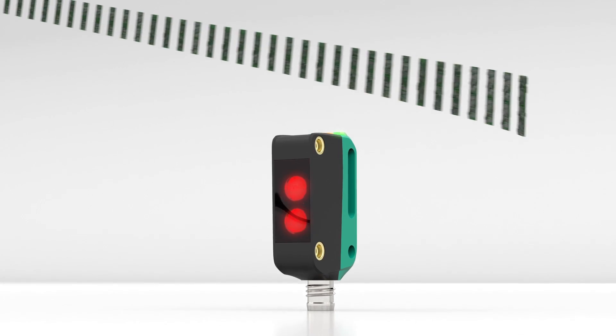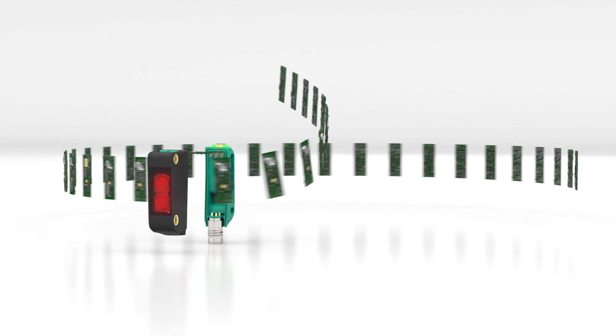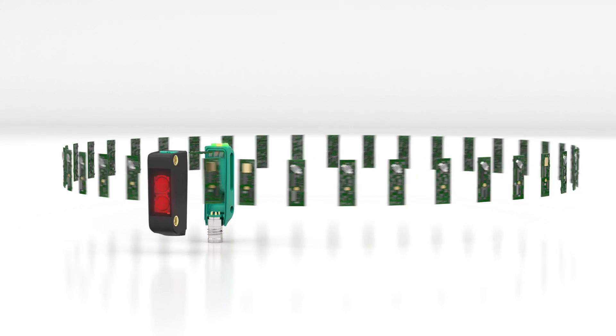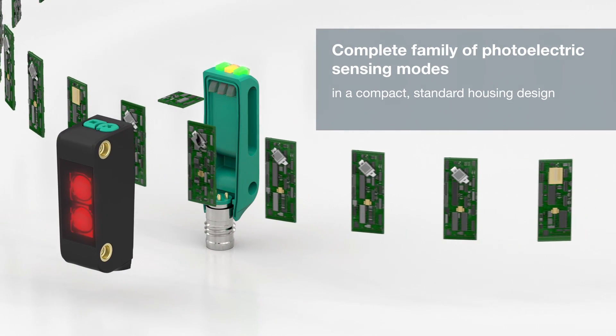R100 series sensors differ from each other only on the inside because all of the sensing modes from through beam sensors to distance sensors are combined in a compact standard housing design.